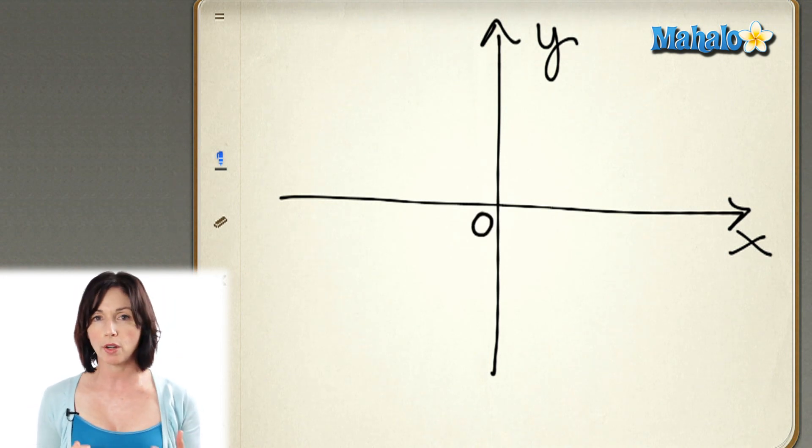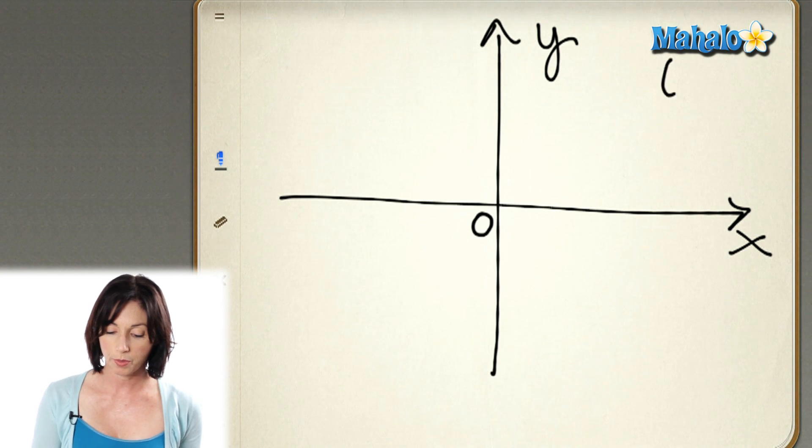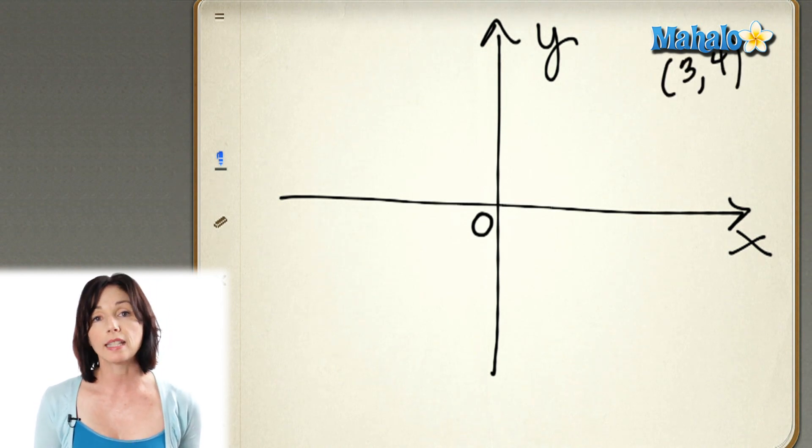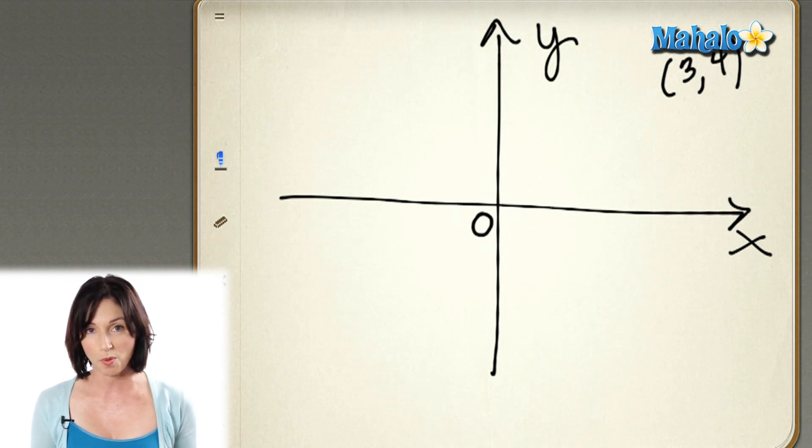Now, when you see a pair of coordinate points, something like 3, 4, the first value is the x-coordinate, and the second value is the y-coordinate.